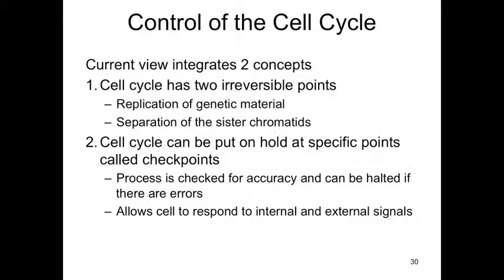The process is checked for accuracy and can be halted if there are errors. For example, if the cell is not ready to divide or there's some genetic disorder, there would be a checkpoint at the G1/S boundary. Or if the DNA was replicated but it wasn't done correctly, then the cell would not be permitted to move through the G2/M checkpoint. This allows the cell to respond to internal and external signals to decide if it's right to divide.